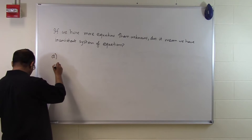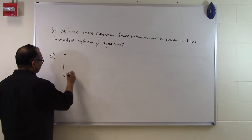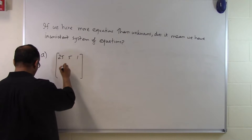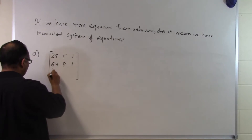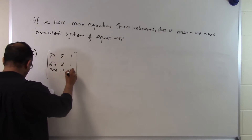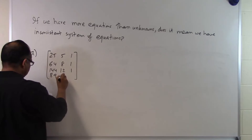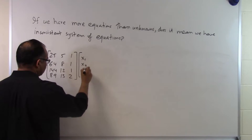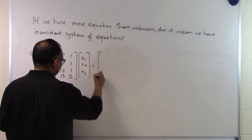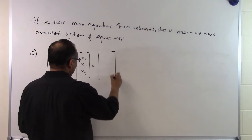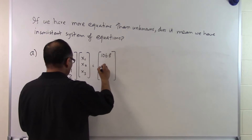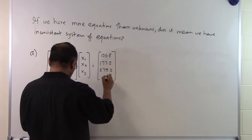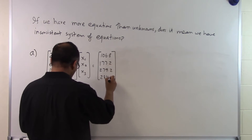Let's take three examples. In the first example, somebody gives us a set of equations with coefficient matrix entries 25, 5, 1 / 64, 8, 1 / 144, 12, 1 / 89, 13, 2, and unknown vector x1, x2, x3, equal to right-hand side 106.8, 177.2, 279.2, and 284.0.